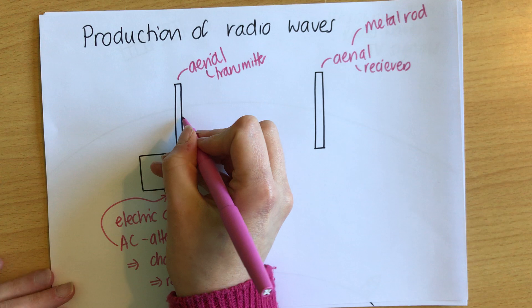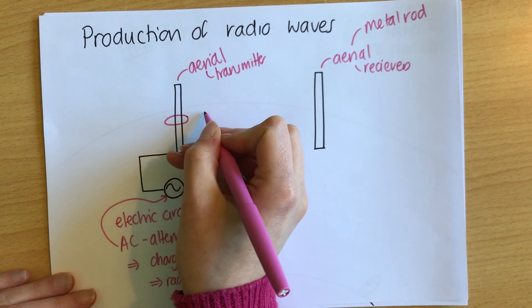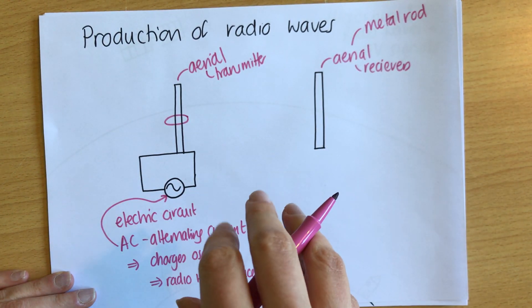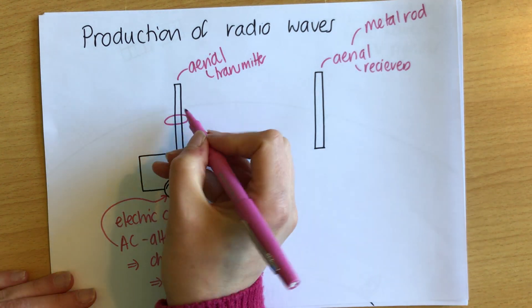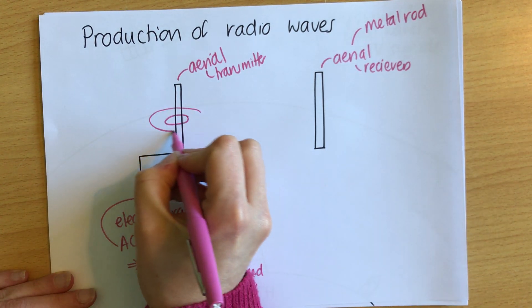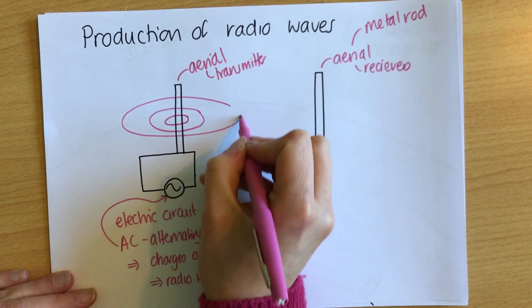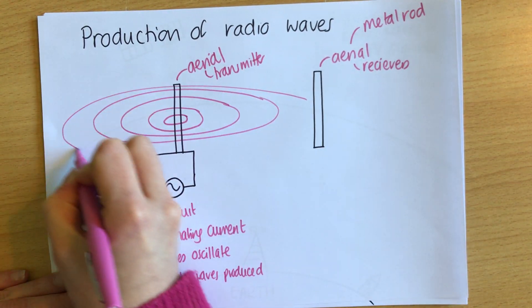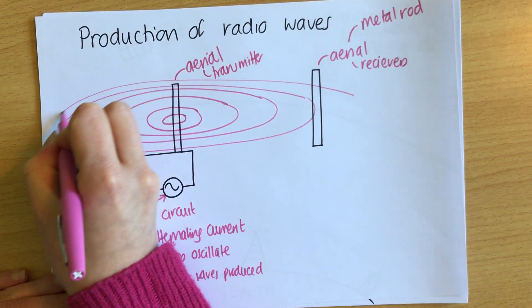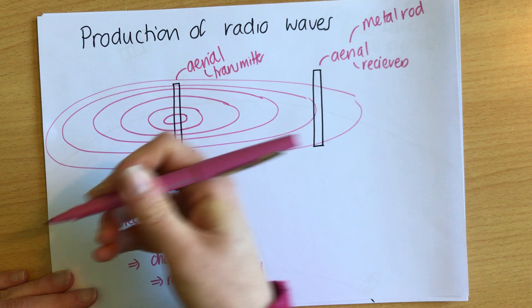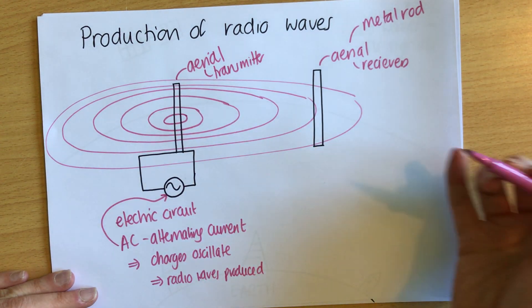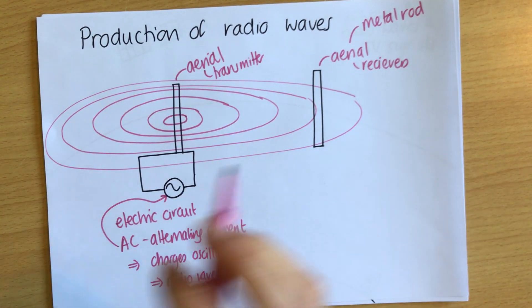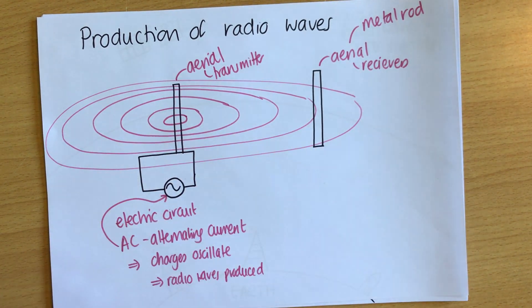Those radio waves are produced around the wire, and just like dropping a pebble into a pond and seeing the waves ripple out, the same thing happens here — the waves spread out and carry on, getting weaker as they go. At this point in the diagram, something important has happened: the radio waves have now reached the receiver.